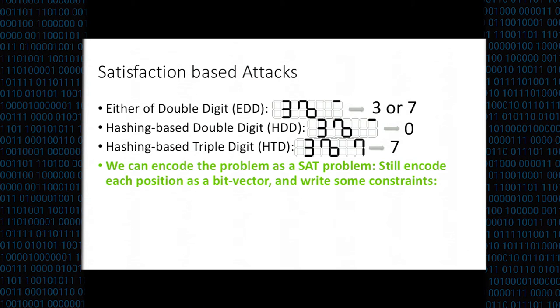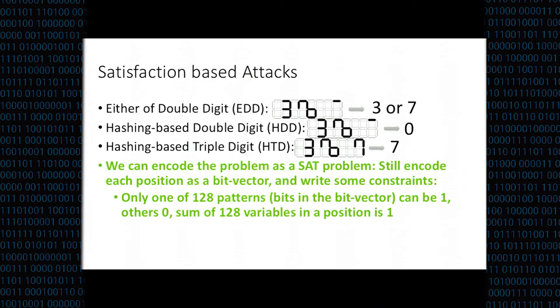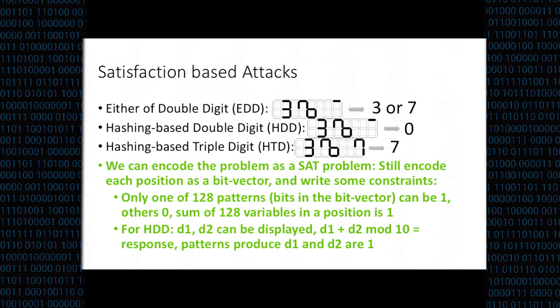Can we attack this? There is no deterministic information. But we can use what we call satisfaction-based attack, also linear program-based attack. We first encode the problem as a satisfaction problem. We still encode each position as a bit vector of 128 variables and write some constraints. One constraint is that one of the 128 variables must be 1 and others must be 0. That means only one pattern is true in this position. Each position can only take one pattern. Another constraint is, for example, for HDD, if D1 plus D2 is a response, the patterns that produce D1, D2 are 1, others are 0. There are more constraints if we observe more transcript.